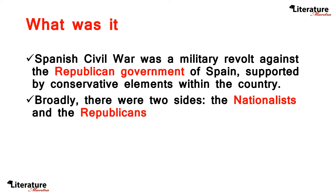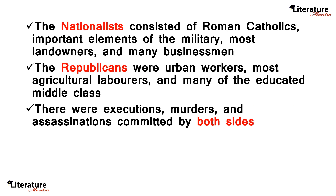The Spanish Civil War was a military revolt against the Republican government of Spain, supported by conservative elements within the country. Broadly, there were two sides: the Nationalists and the Republicans. The Nationalists consisted of Roman Catholics, important elements of the military, most landowners, and many businessmen. The Republicans were urban workers, most agricultural laborers, and many of the educated middle class — and this side was the side of the government. There were executions, murders, and assassinations committed by both sides, however.